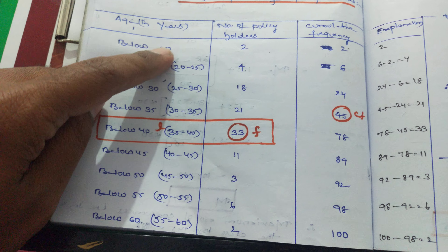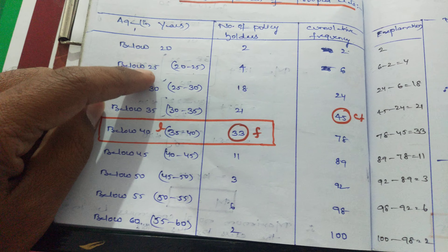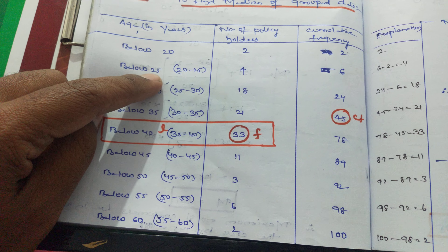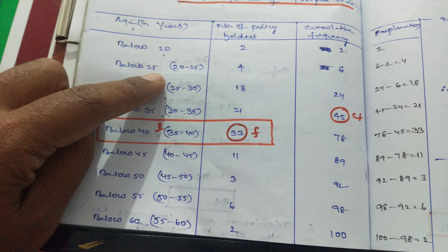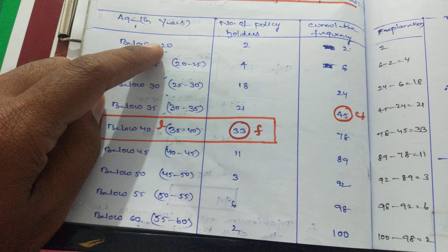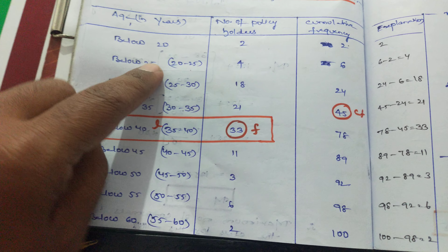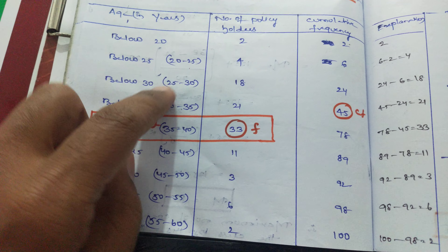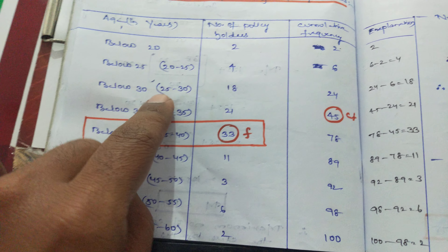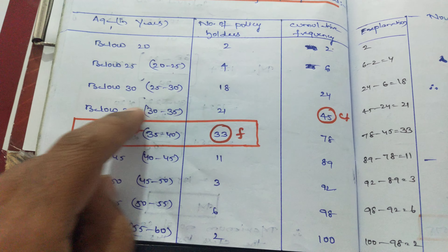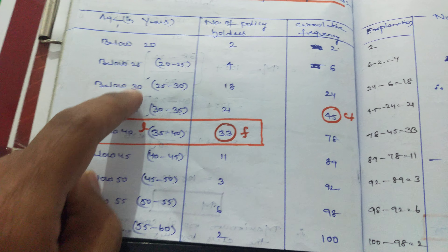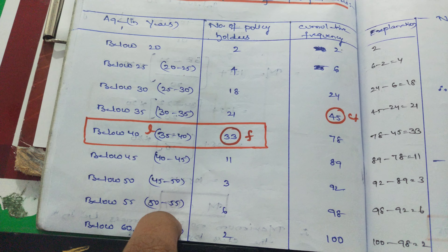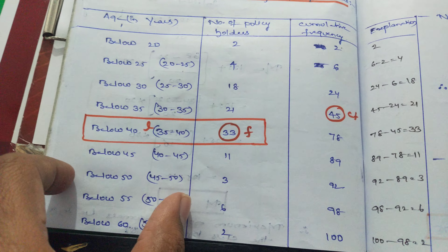So you have to leave the first observation as it is, and from the second observation onward, take the previous observation to the current observation as the class interval. Then the third observation uses the second-to-third as the class interval, and the fourth uses third-to-fourth. Write the class intervals in this sequence. That is how we write the class intervals and find out the cumulative frequency.